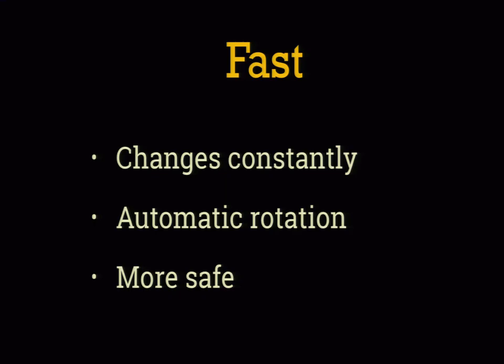Some newer secrets platforms are bringing in the concept of automatic rotation, where the system will regenerate and redistribute secrets in a span of hours or minutes. Examples include OCSP stapling for TLS or Amazon EC2 role credentials, which expire every six hours. Within reason, the more often a secret is rotated, the safer it's going to be. When you're talking about minutes to hours, it's going to be a lot safer than days to weeks to months.